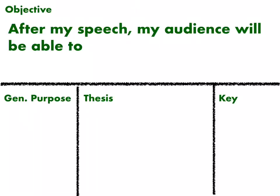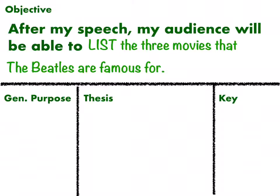For example: my audience will be able to list the three movies that the Beatles are famous for. There are three key ideas in this. You'll notice there's a number — three — and that is the number of main points in your speech; three is the best number to have. Keep it really simple with one idea, so you don't see the word 'and' in there. Make sure you have a number, and it's probably going to be three.